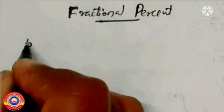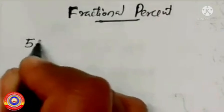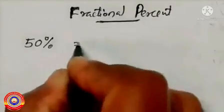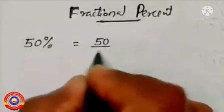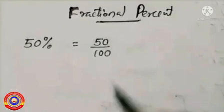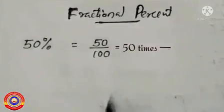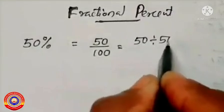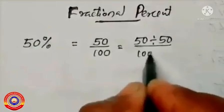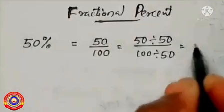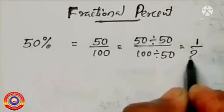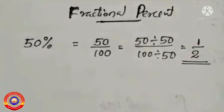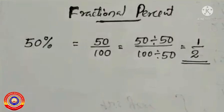First question: 50 percentage. Let's write 50% as a fraction. 50% is equal to 50 by 100, that means 50 times 1 by 100. We have to find the equivalent fraction of 50 by 100 in its lowest form. We can divide 50 and 100 by 50. 50 divided by 50 is equal to 1, and 100 divided by 50 is equal to 2. Therefore 50% is equal to 1 by 2.